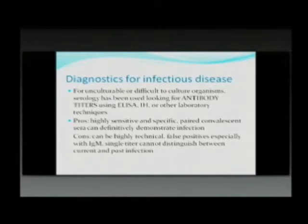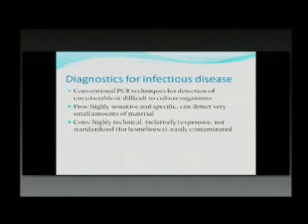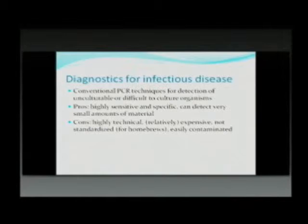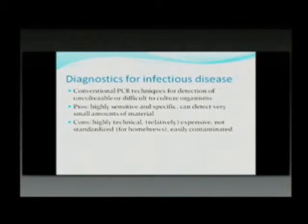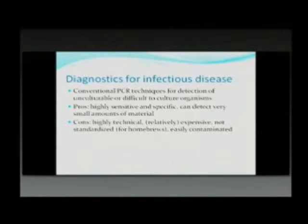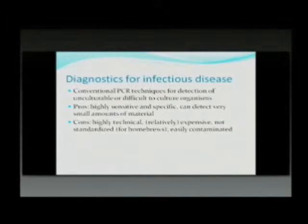Looking at newer techniques that have become conventional, conventional PCR amplifies genetic material and is very good for detecting unculturable or difficult-to-culture organisms. It is very sensitive and specific because it targets a very specific genetic signature, and you only need very small amounts of material. However, it is highly technical, relatively expensive — though costs keep going down — not standardized across labs, and easily contaminated. Even a tiny amount of contaminating material landing on your PCR mix can produce a false positive.